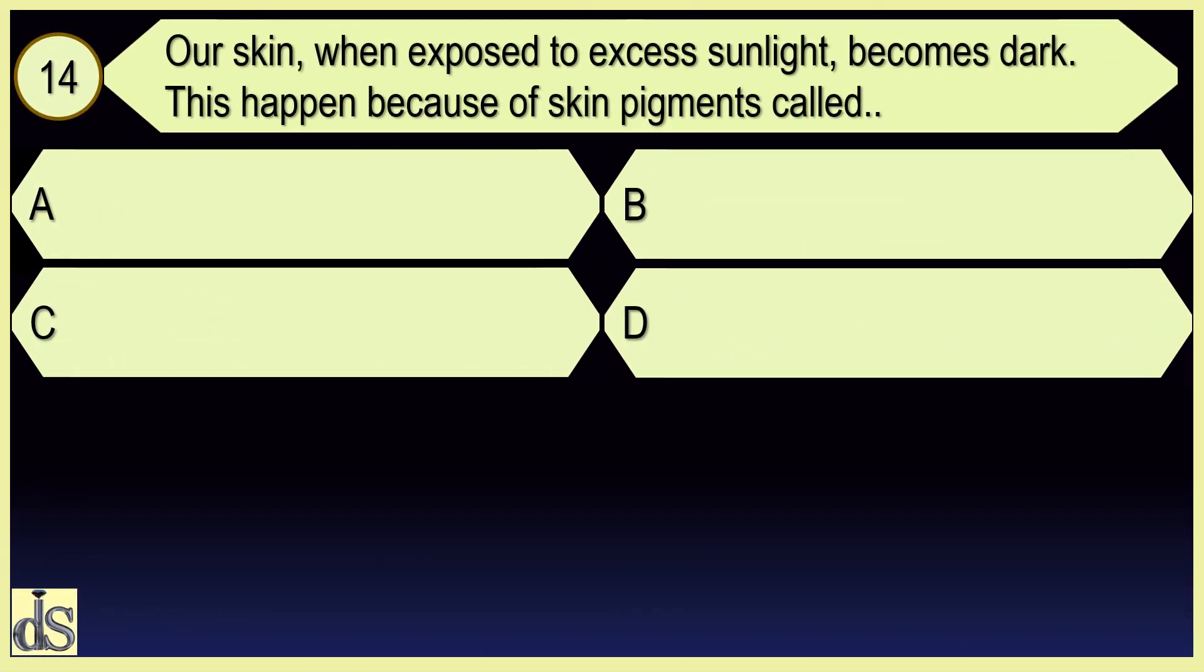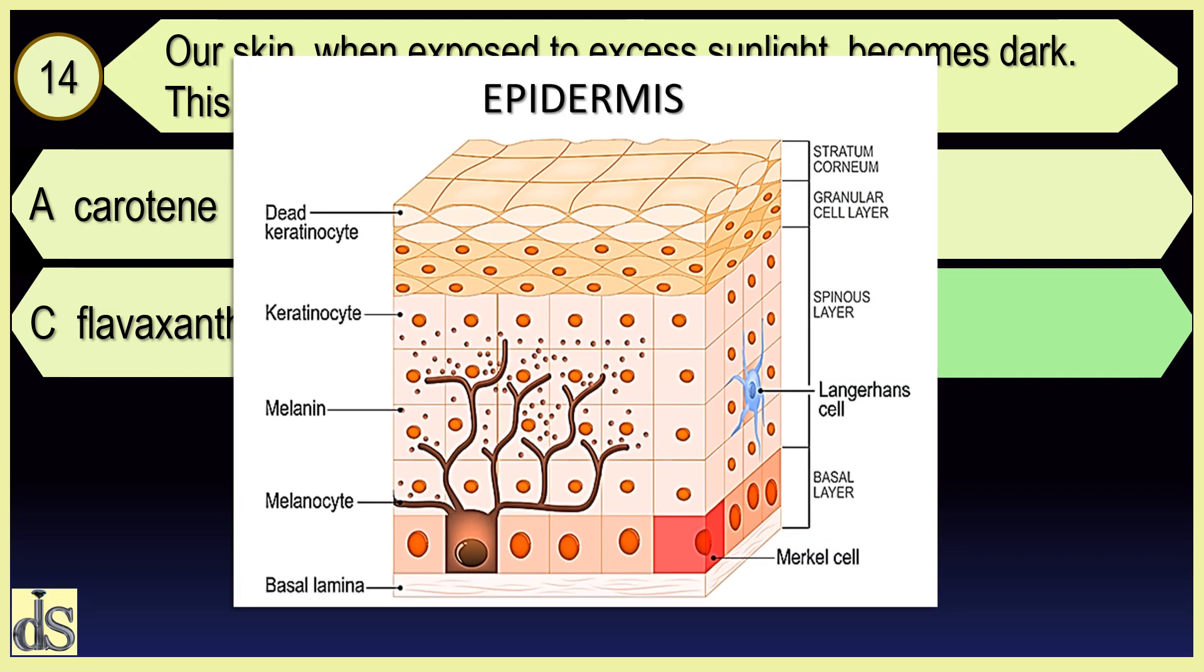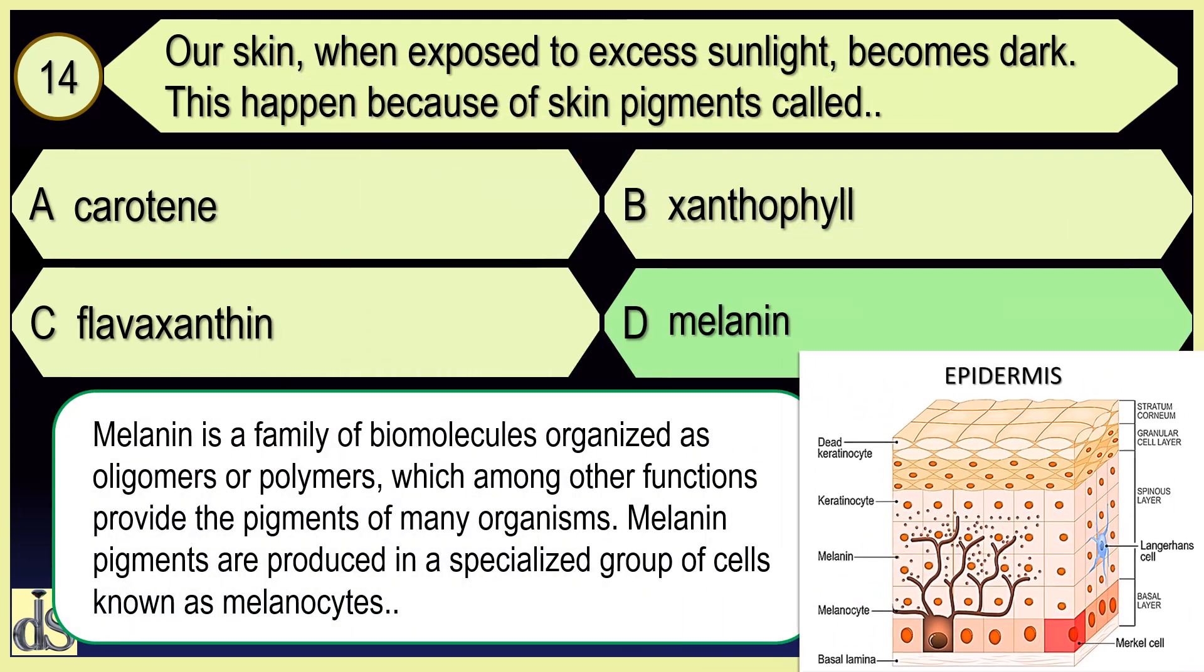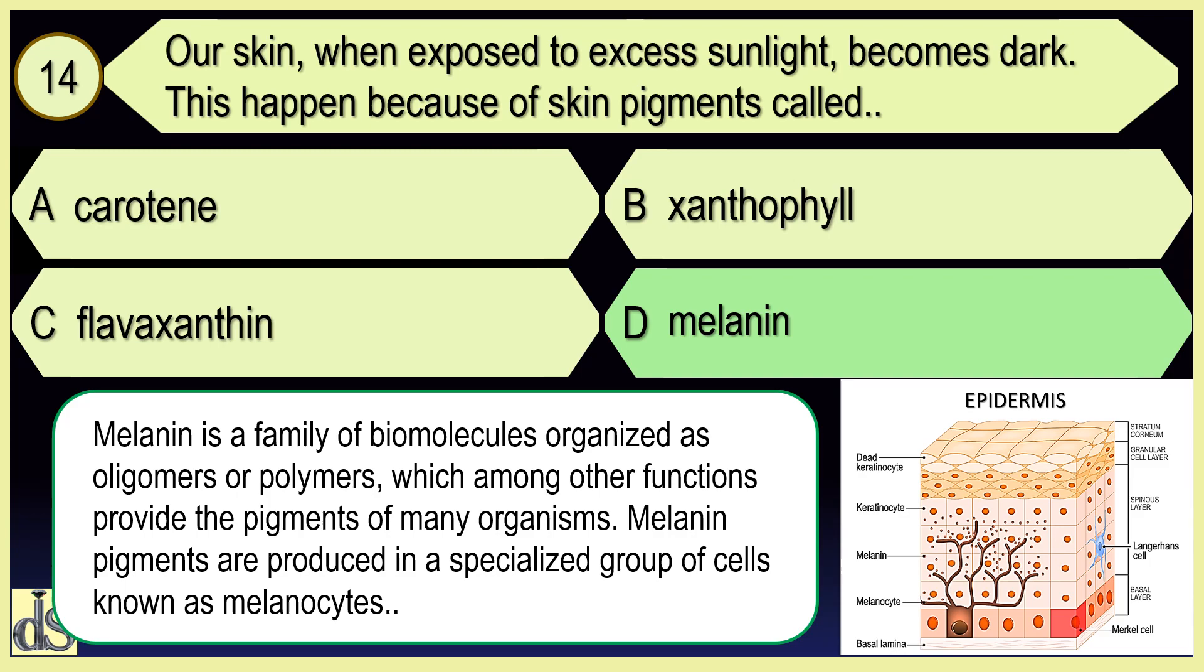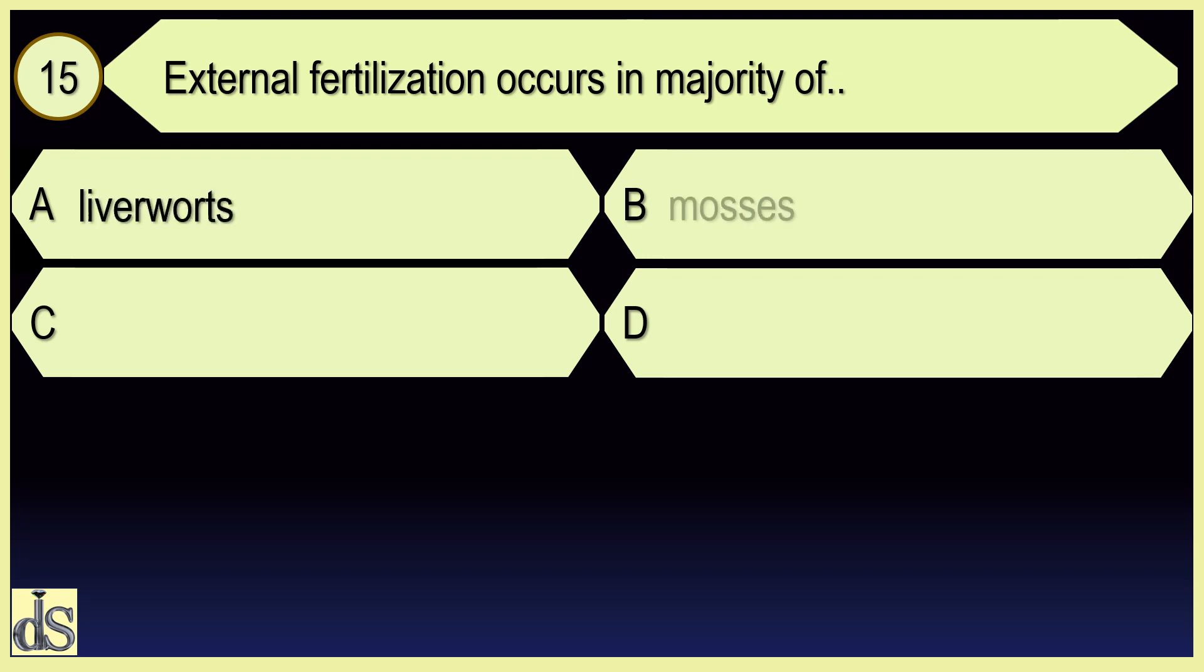Our skin when exposed to excess sunlight becomes dark. This happens because of skin pigments called melanin. External fertilization occurs in majority of algae.